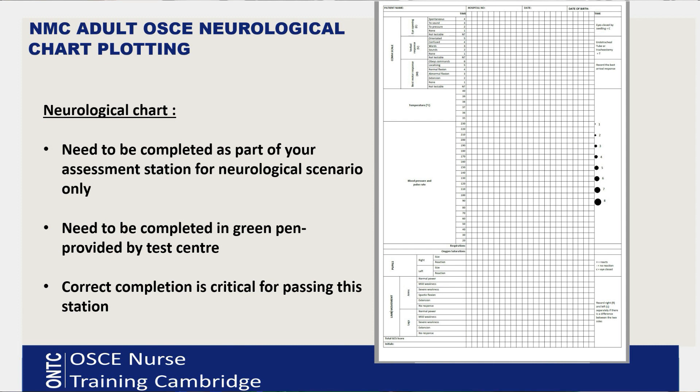The Glasgow Coma Scale, which is a neurological chart, needs to be completed in green pen provided by the test center. Correct completion is critical for passing this station. Like I said, the main fail in this assessment station is always charting, so make sure you can master it — learn it, master it, and practice it.